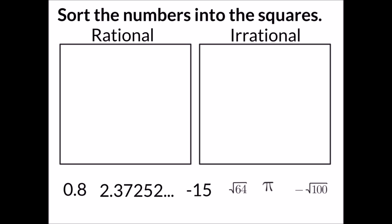Now I could ask you to sort the numbers into the squares where you tell me if a certain number is a rational number or an irrational number. If we look at the first number, eight tenths, that is a rational number because it's a decimal that ends.